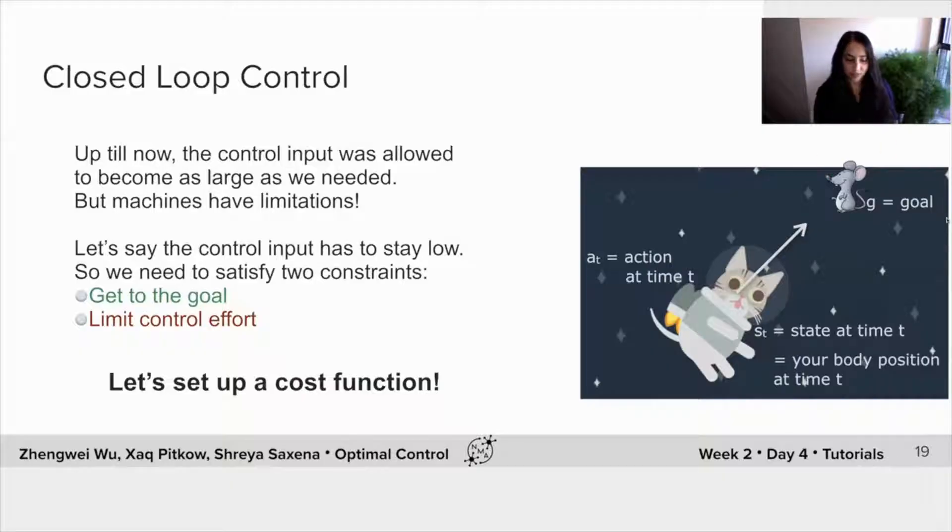So that means that we have to satisfy two constraints. We want to get to the goal, but use a reasonable amount of control effort. This is getting slightly complicated. So let's set up a cost function.